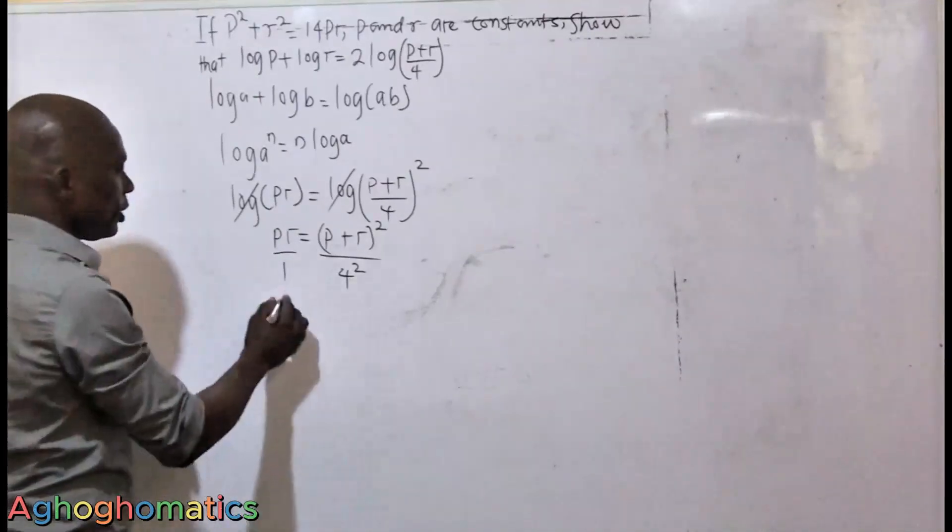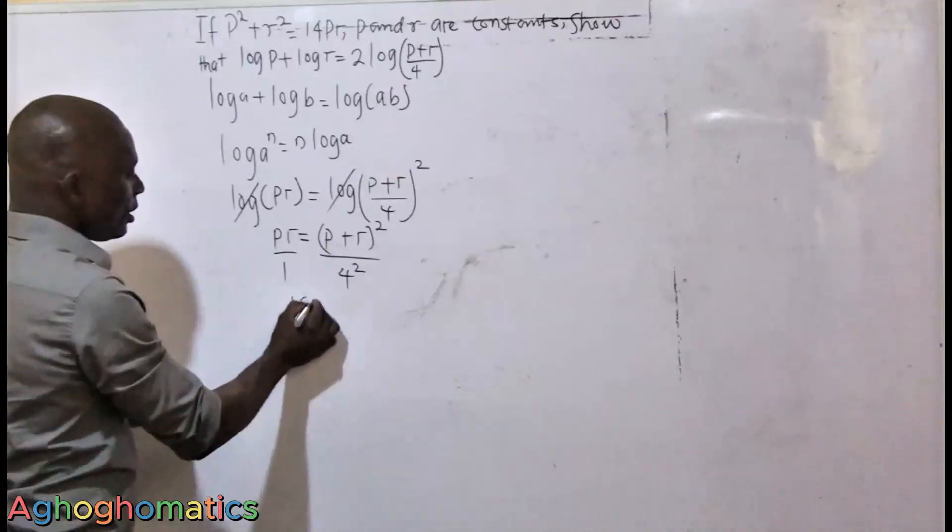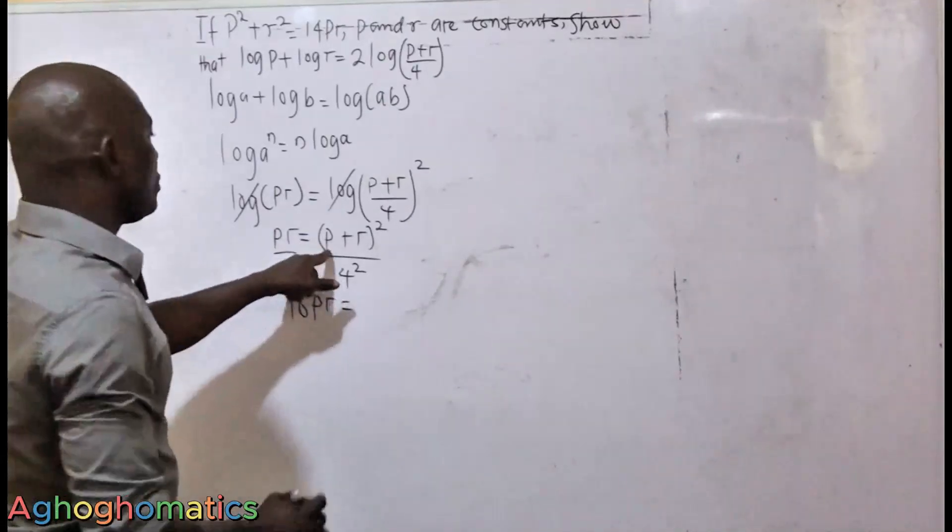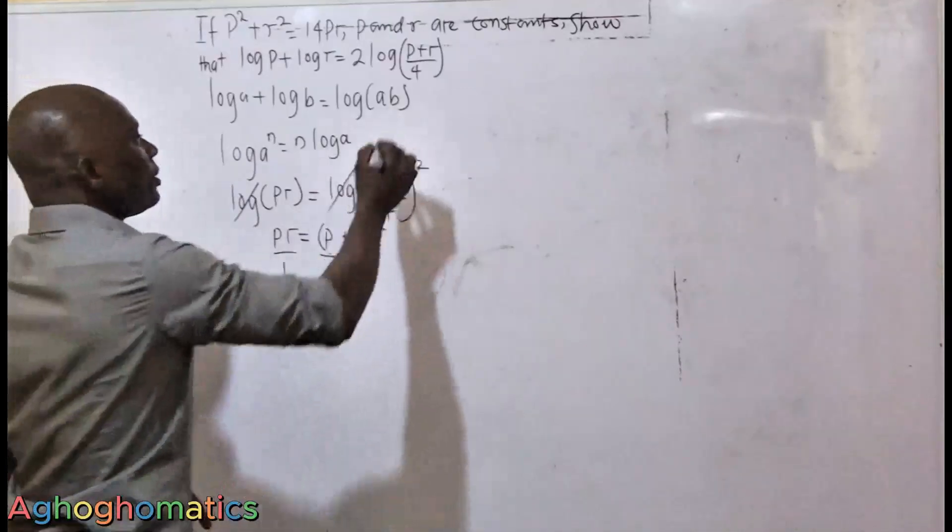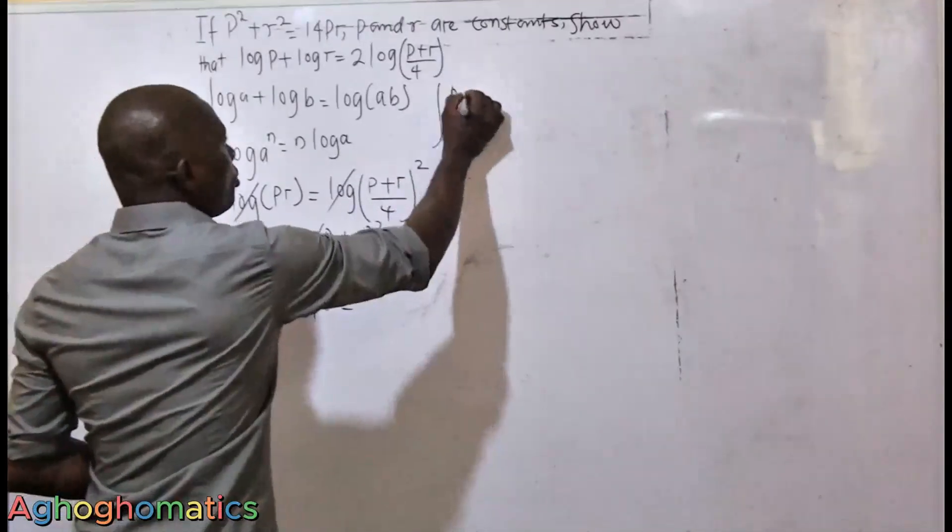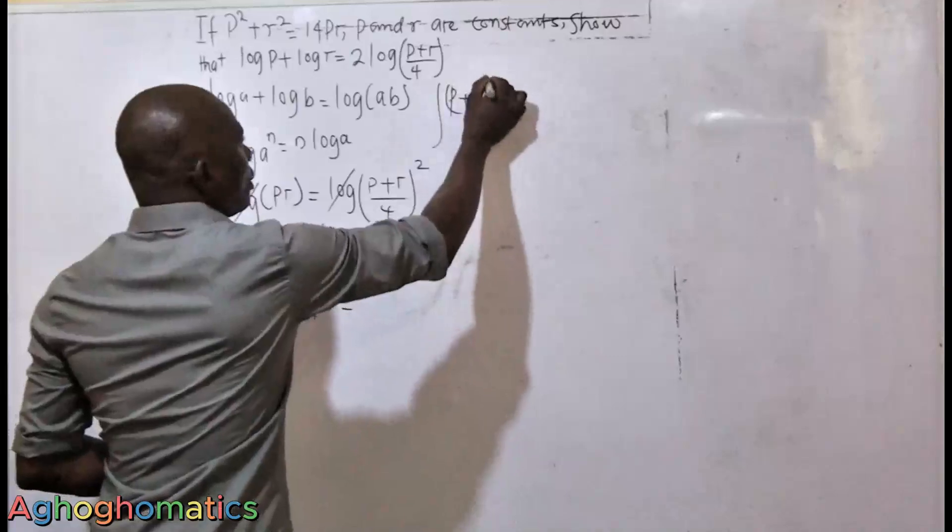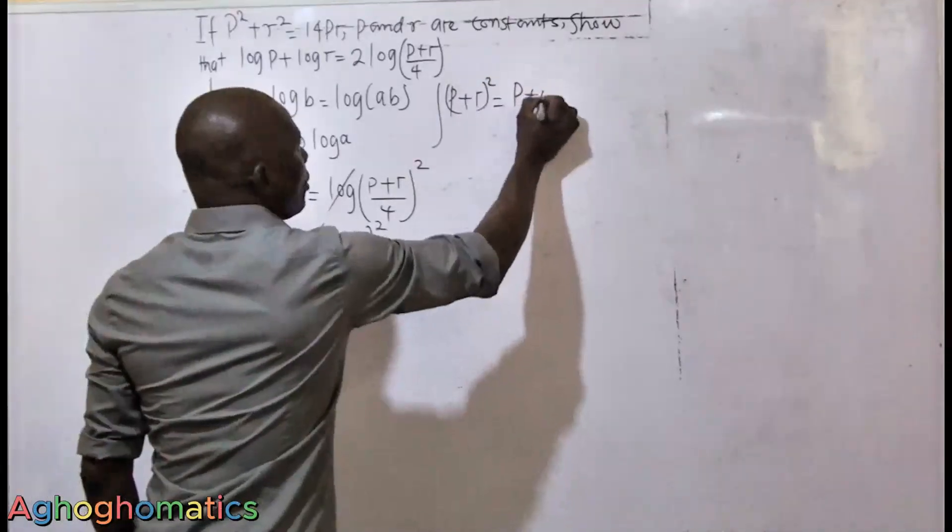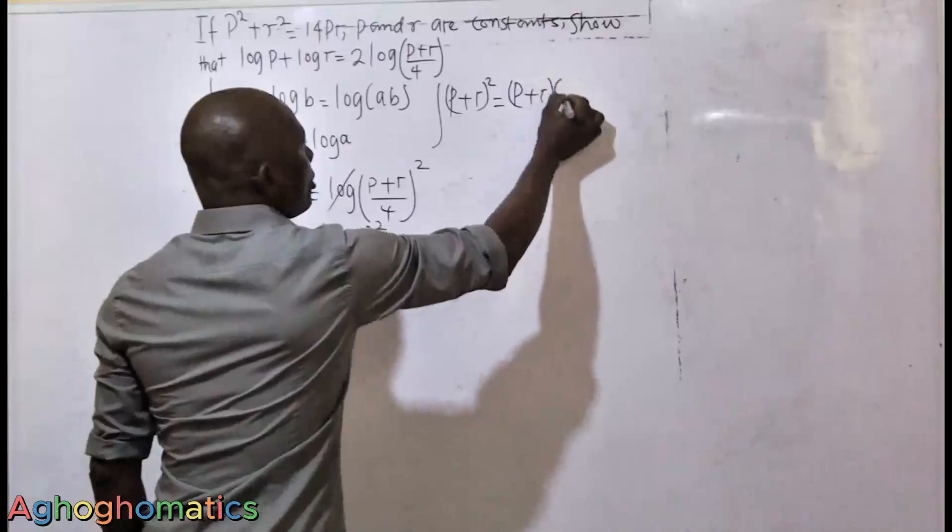Remember that 4 squared is 16, so this will become 16PR. Now if we are to do this, we need to expand here. We need to expand (P plus R) squared.